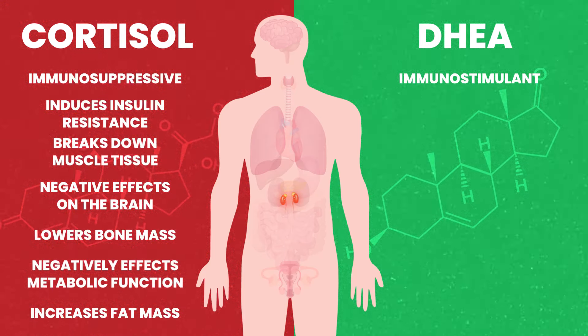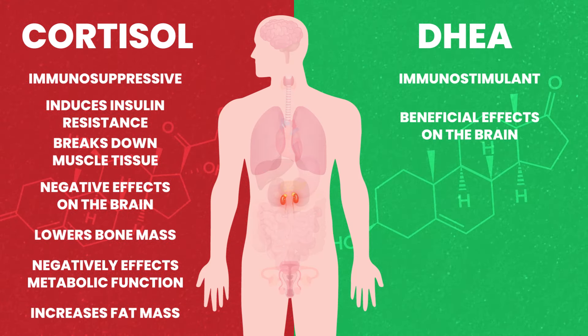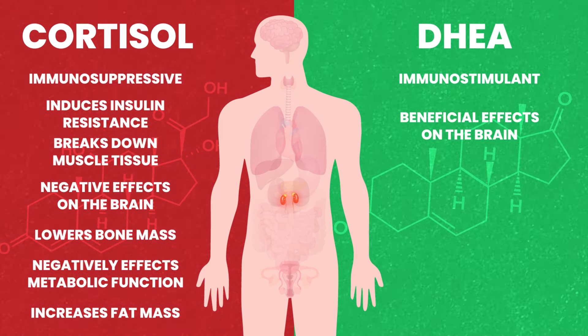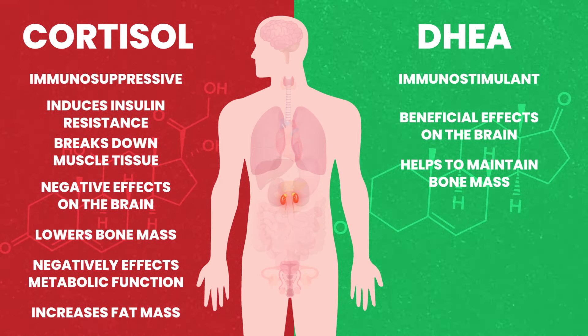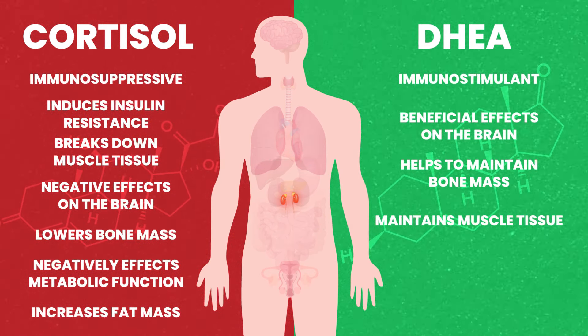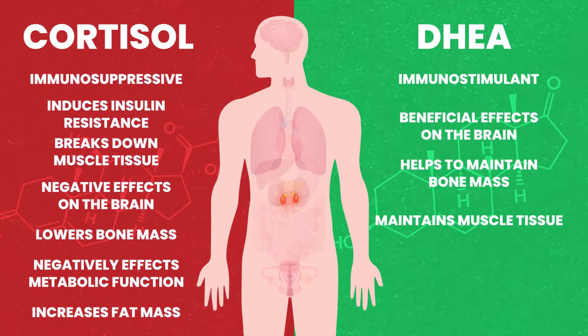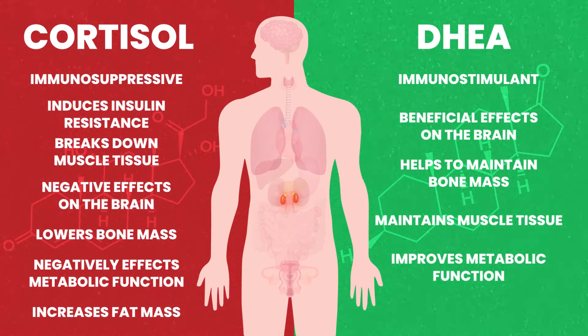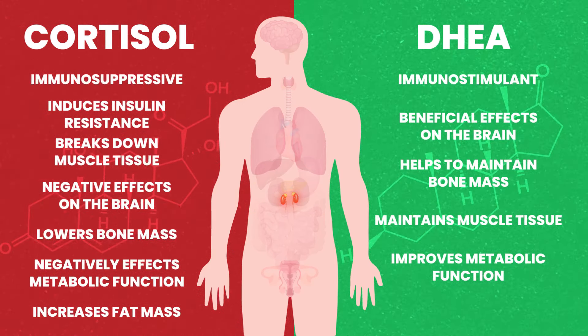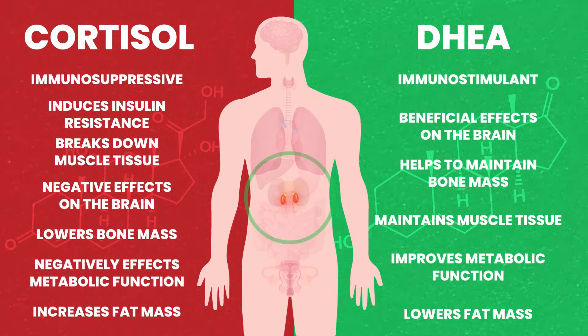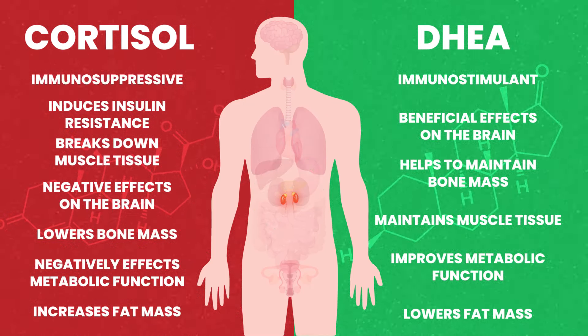This ratio tells you what your chronic stress level is, and it's such an essential metric inside the bioenergetic sphere because stress is central to understanding energy. DHEA's specific functions include improving immune function and protecting the brain, whereas cortisol has a negative impact on the brain over the long term. DHEA maintains bone mass where cortisol degrades it, maintains muscle mass where cortisol degrades it, improves metabolic function where cortisol worsens it, and helps lower fat mass where cortisol can redistribute and increase fat mass over time.